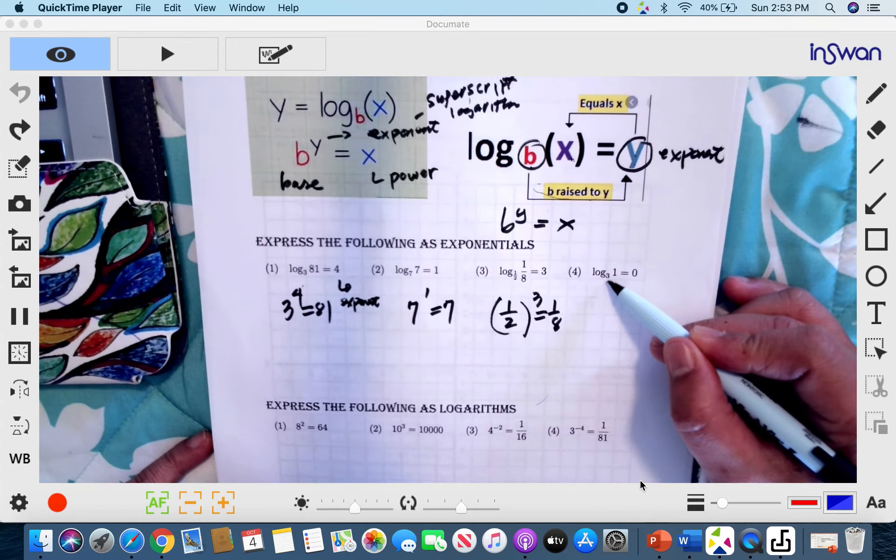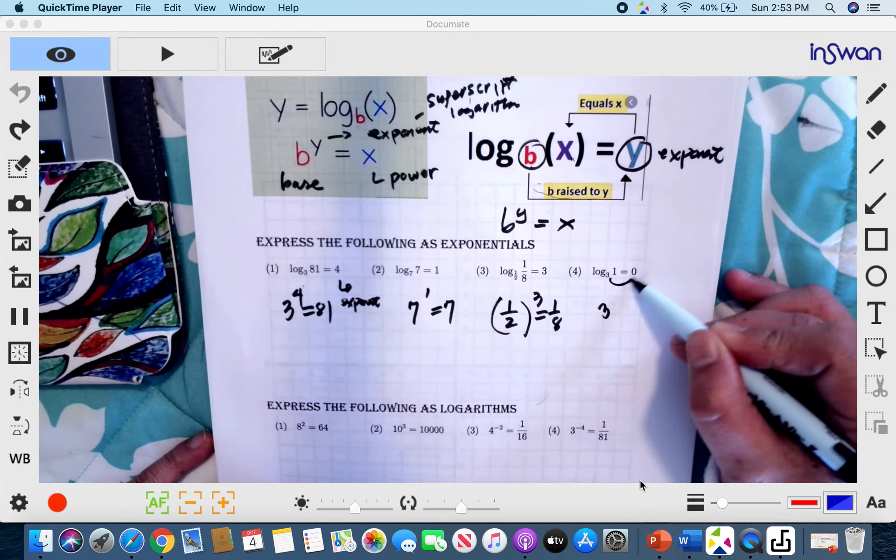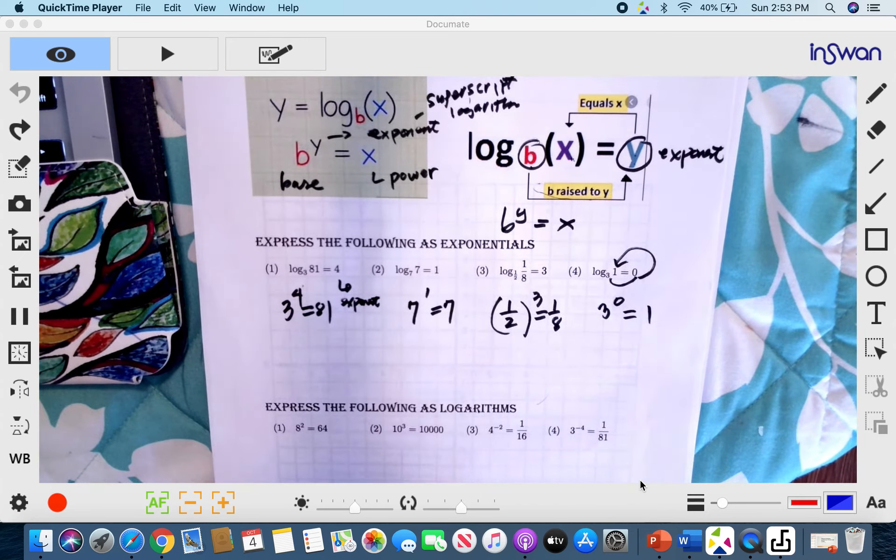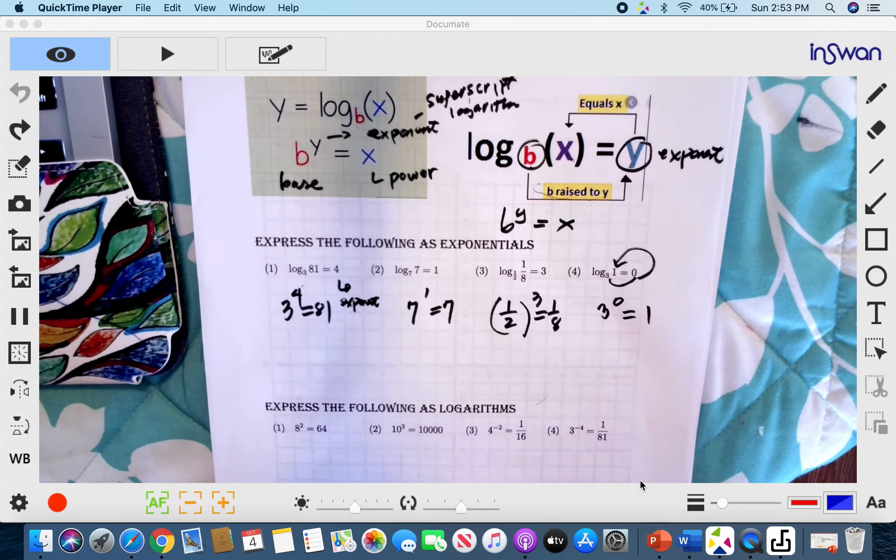So therefore, from the base 3 to the exponent and then 1. So 3 raised to 0 equals 1. Going in a counterclockwise direction starting from the base.